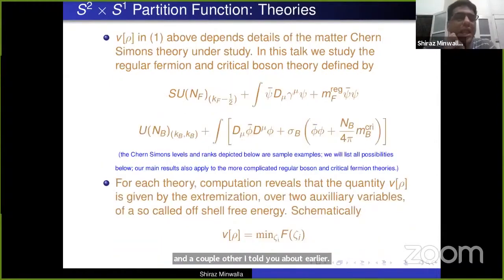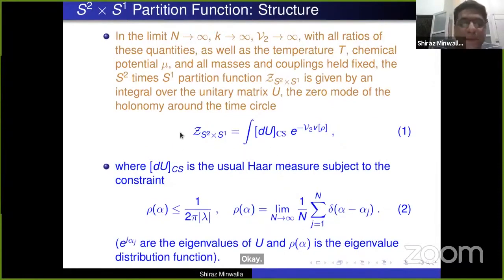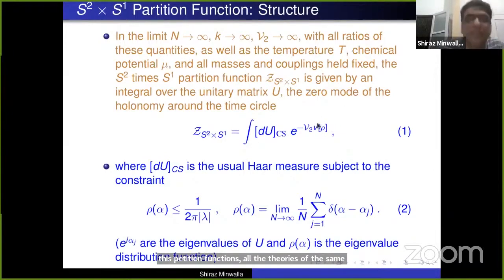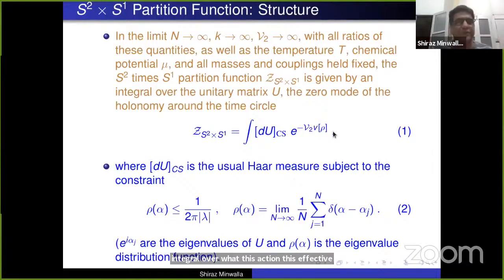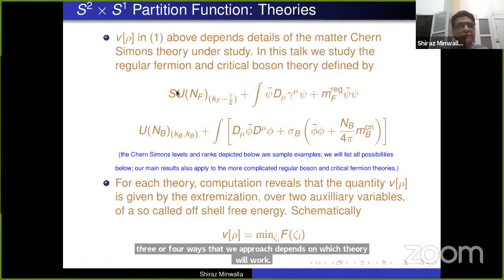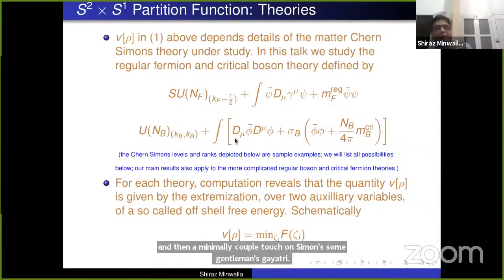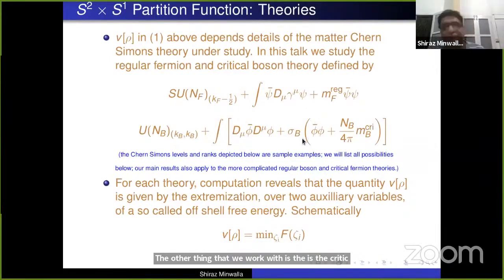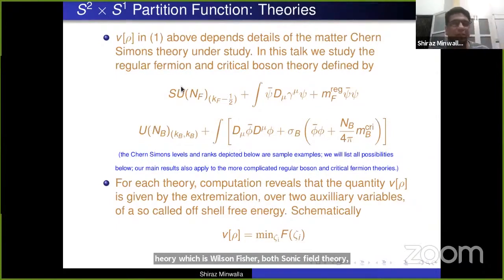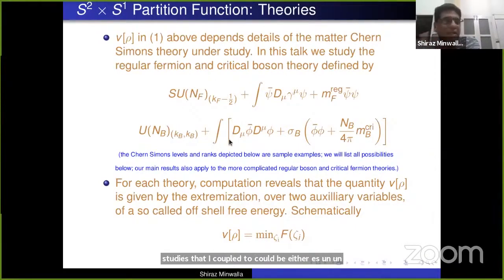Different theories define different effective actions V(ρ). In this talk I will work with two theories. The first is the regular fermion theory — fermions with a mass, minimally coupled to a Chern-Simons gauge field. The other is the critical boson theory — a Wilson-Fisher bosonic field theory minimally coupled to Chern-Simons. The Chern-Simons theories coupled to could be either SU(N) or U(N). I've taken an example: fermions coupled to SU(N) at level κ, and bosons to U(N) at level κ_B. These two theories are conjectured to be level-rank dual to each other.